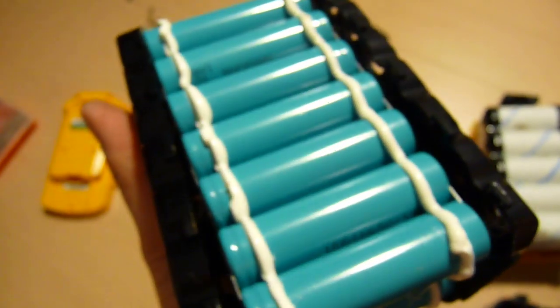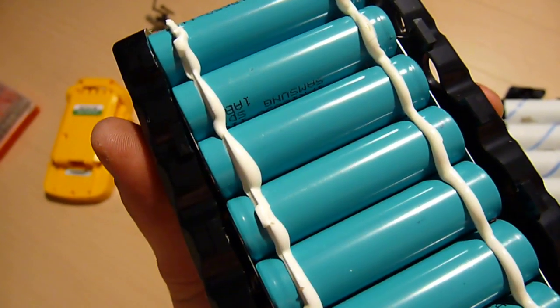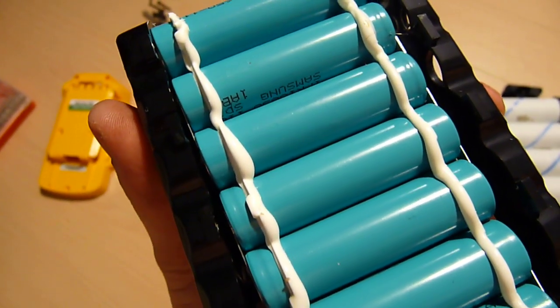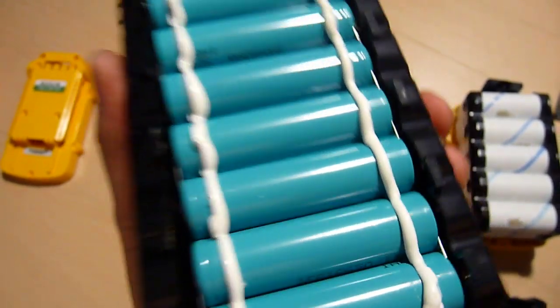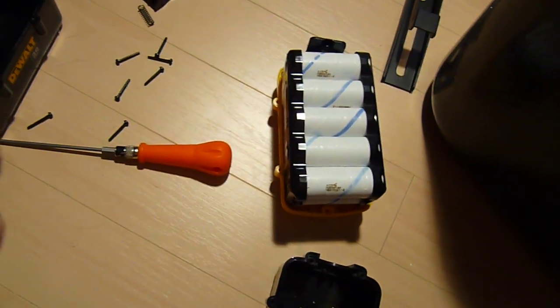There is a total of 20 cells here, 10 cells in series and 2 packs of 10 cells in parallel. So that gives you 2.2 amp hours. So the new battery has 1.1 amp hours less capacity than the old battery.